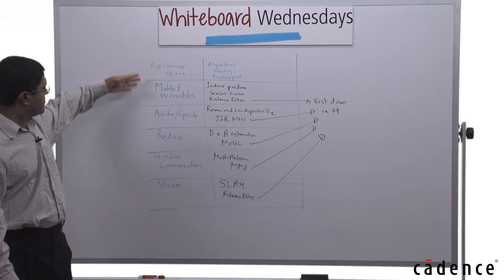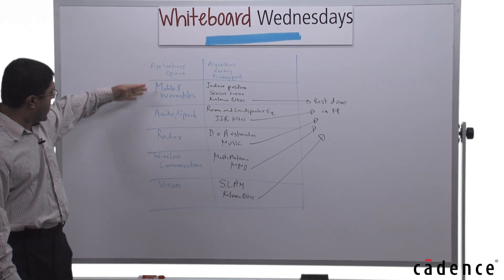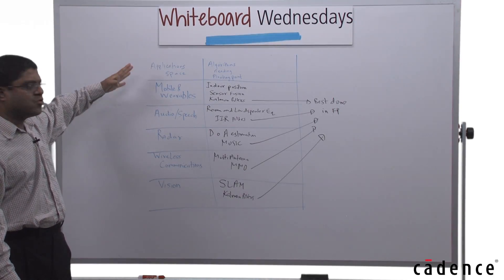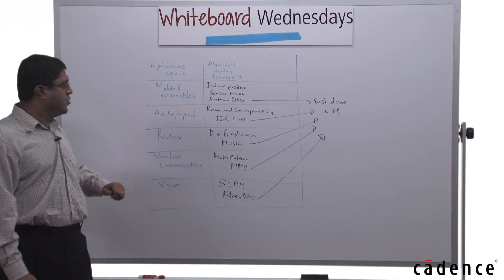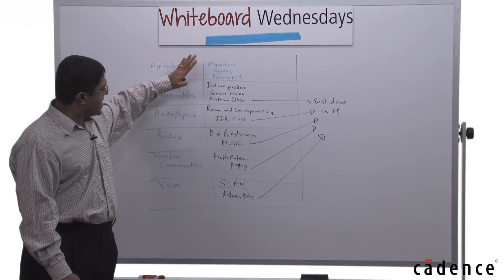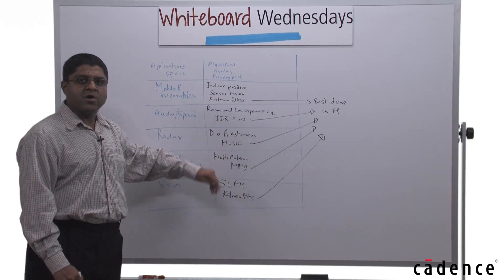We see in the application space ranging from mobile and wireless which is low to moderate compute, all the way to wireless communications and vision which is very high compute. There are algorithms required which need floating point computations.